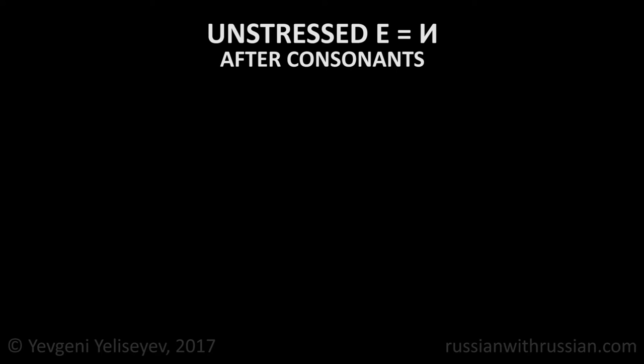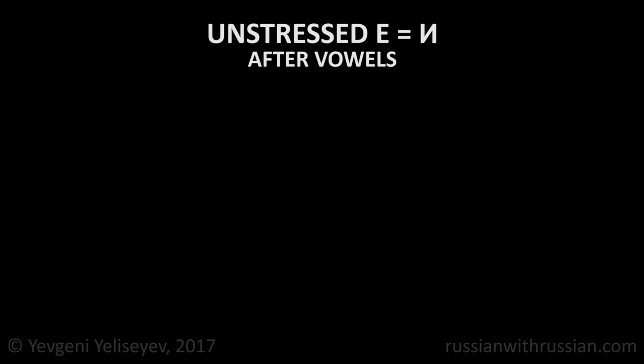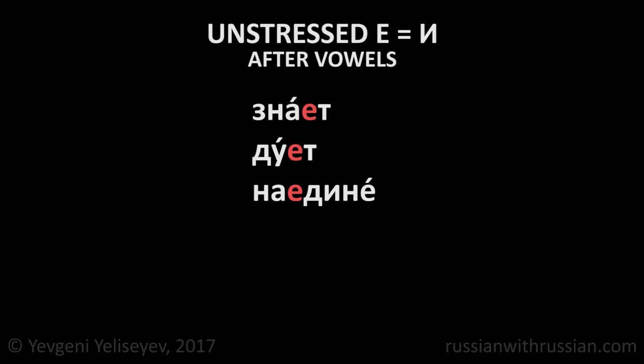In other cases, unstressed Е that is not located at the end of the word is pronounced as И. After consonants: Несу, теперь, хочет. After vowels: Знает, дует, наедине, проедать.